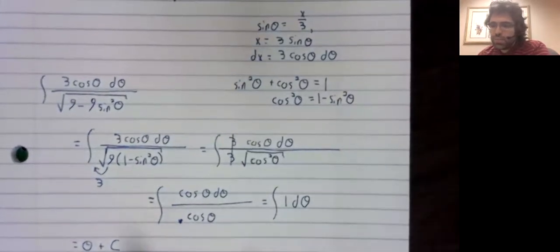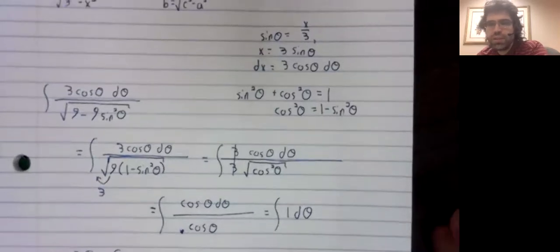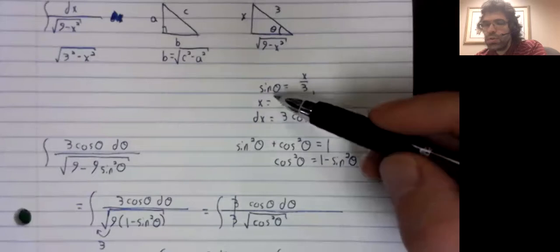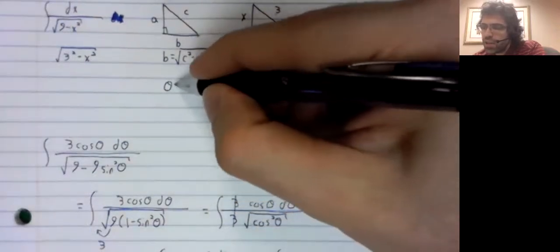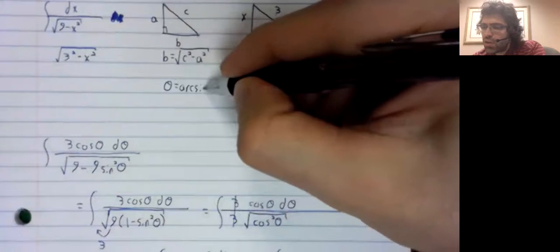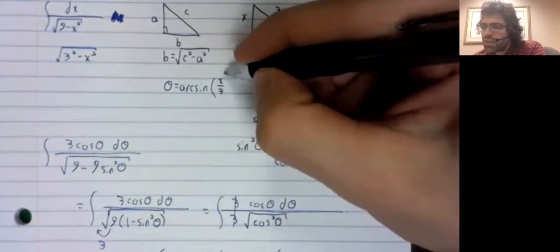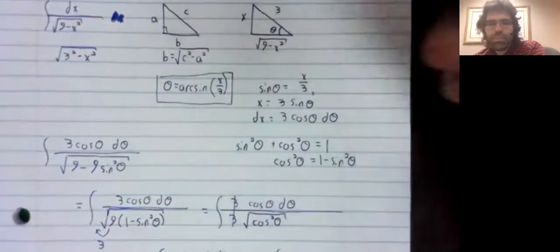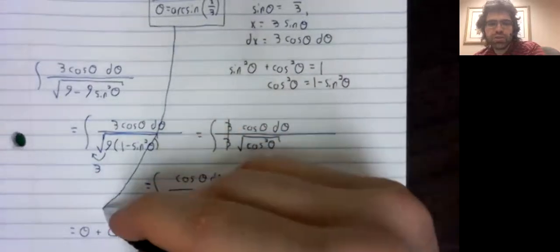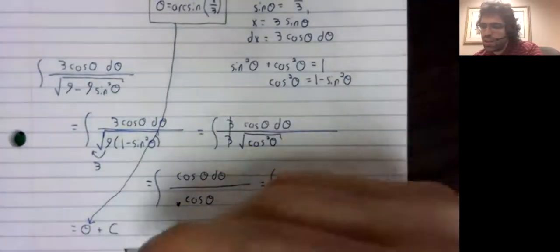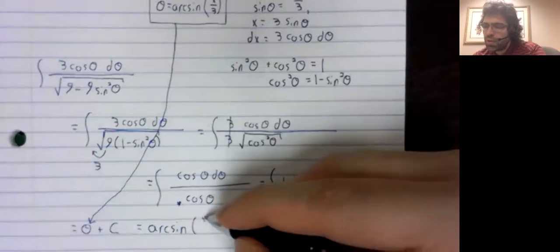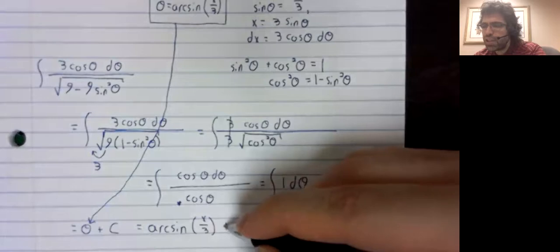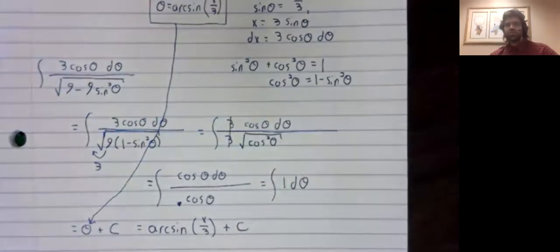Now theta is a dummy variable. We certainly don't want that to be our solution. Going back here, if we take the arc sine of both sides of this, we get theta is the arc sine of x divided by 3. So we'll take that down here to get as our solution, the arc sine of x divided by 3 plus a constant of integration.